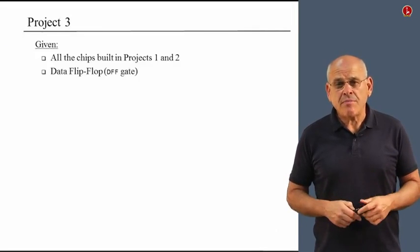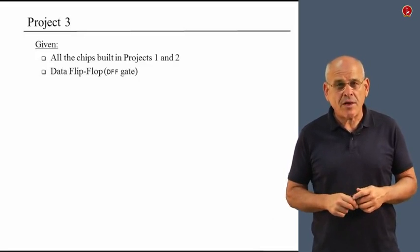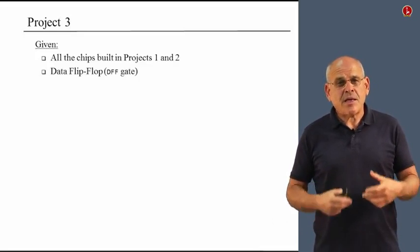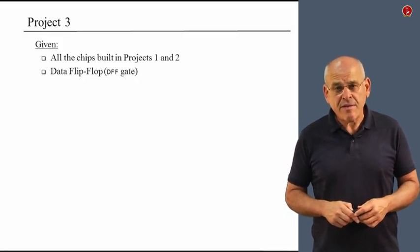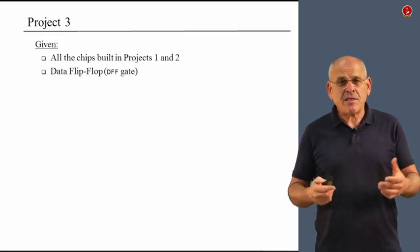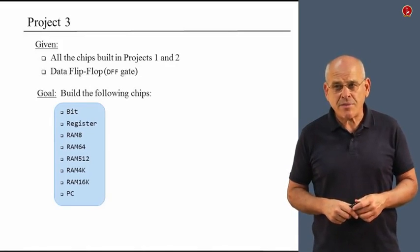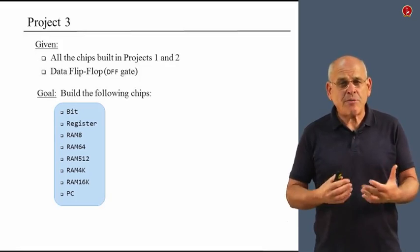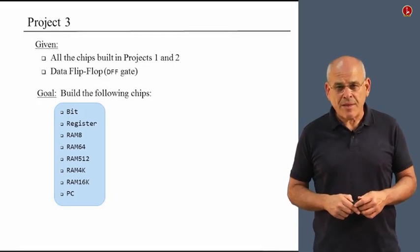So project three begins with all the chips that you designed in projects one and two, as well as a primitive data flip-flop that you can use as you see fit. And based on these building blocks, we have to build the following chips. We've seen all these chips in one way or another in the previous units, and now we actually implement them.